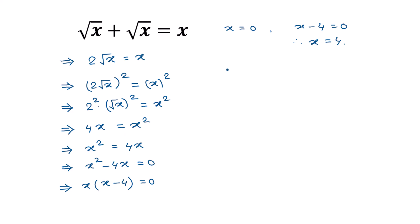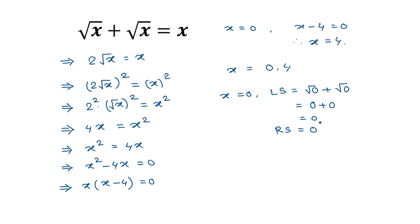So x is equal to 0 and 4. Now let's verify this solution. When x is equal to 0, the left side is square root of 0 plus square root of 0, which is 0 plus 0 equals 0. The right side is x, which is also 0. So left side equals right side, and x equals 0 is a solution.